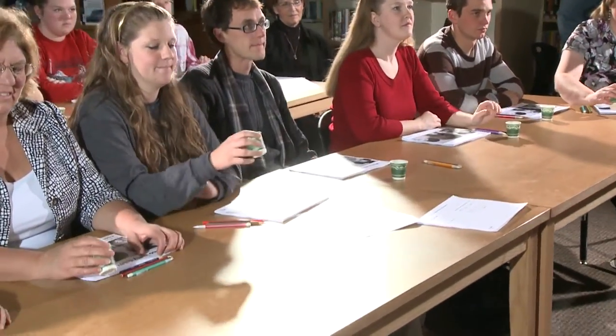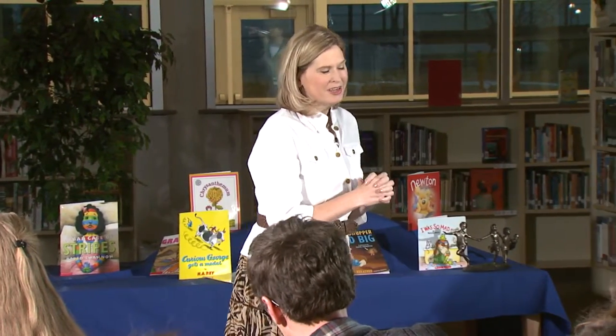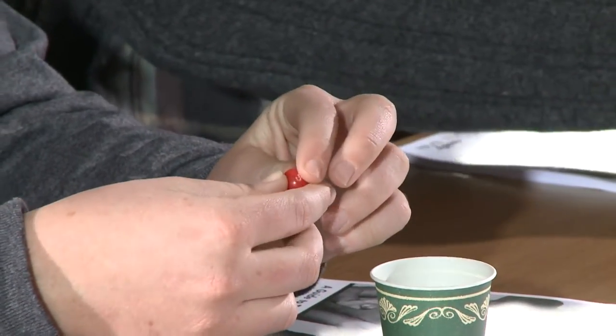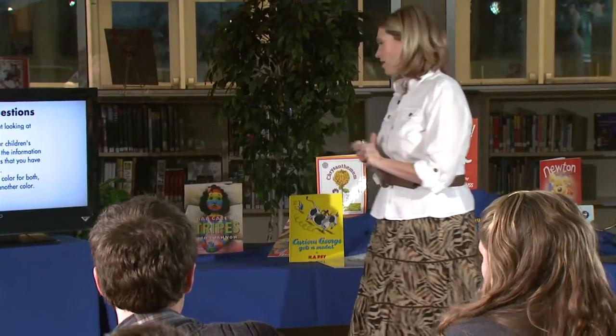We're going to do a little activity to help you think about who you are. In front of you is a little cup of candies. Close your eyes and take two out to get two colors. Share with the person next to you or behind you — someone you may not know. If you got the same color, put it back and get a different one.